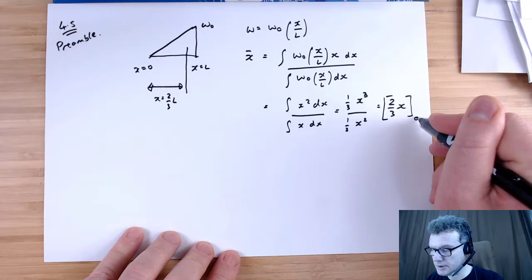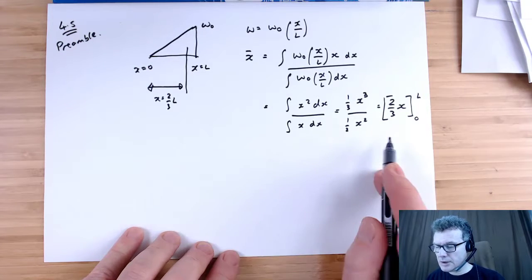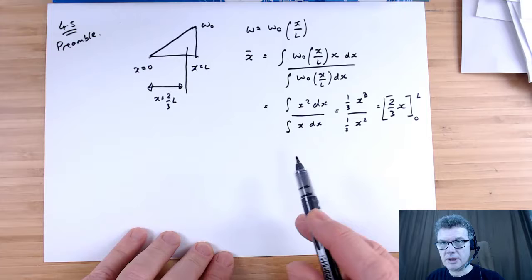I could put limits in here, 0 to L. That's to deal with the centroid. The other thing that I'm going to obviously want to do in these calculations is look for what the weight is.